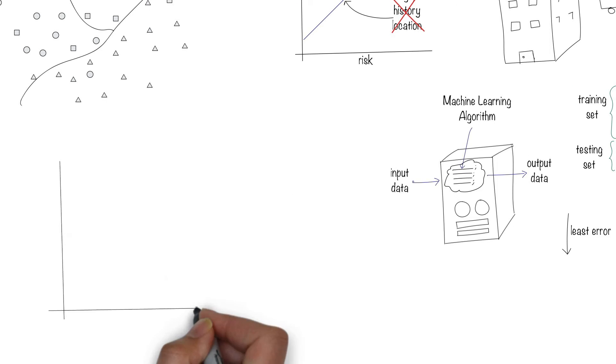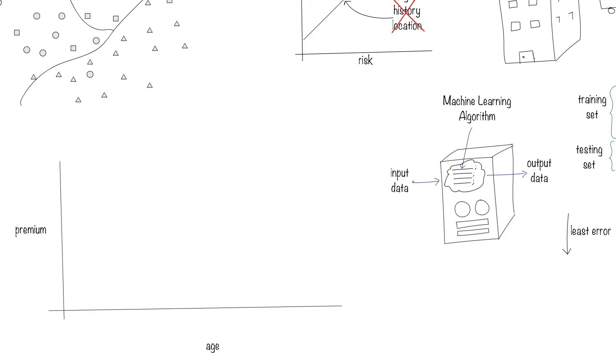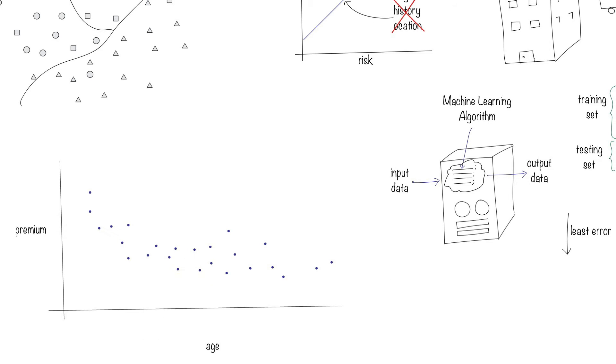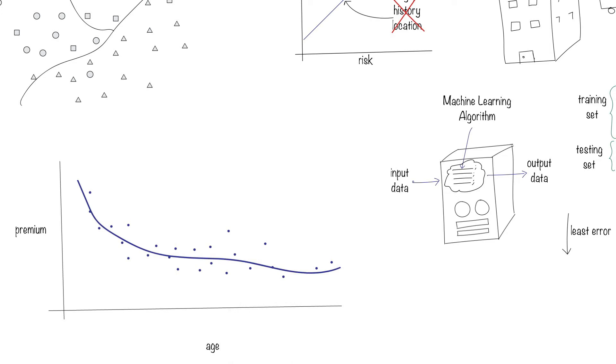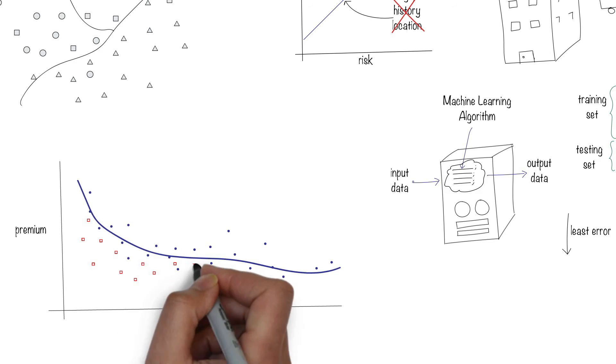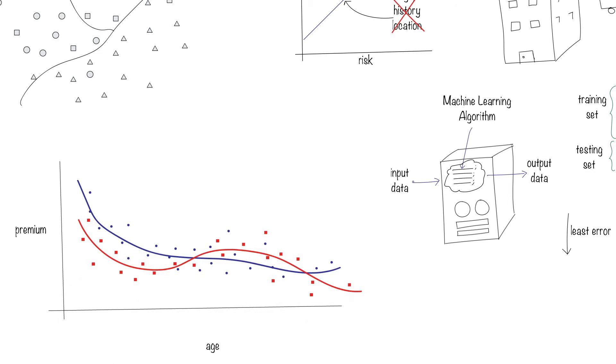Say that the machine found the underlying pattern for the competitor data to have a non-linear relationship between risk and age, and here's what it looks like. You can now run the same experiment with your own company's data and say the results look like this.